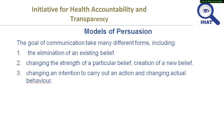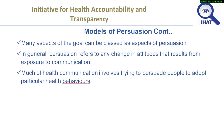Based on the model, we have models of persuasion, based on the goal of communication. The goal of communication takes many different forms, including the elimination of an existing belief, changing the strength of a particular belief, creation of a new belief, changing an intention to carry out an action, and changing actual behavior. Persuasion refers to any change in attitude that results from exposure to communication. Much of health communication involves trying to persuade people to adopt particular health behaviors.